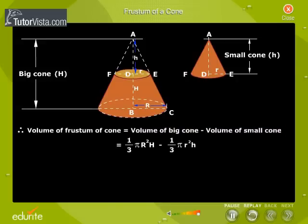1 by 3 pi R square H minus 1 by 3 pi r square h is equal to 1 by 3 pi into R square H minus r square h.